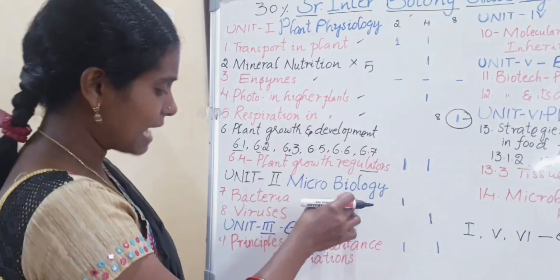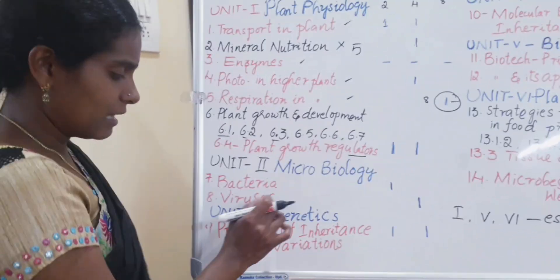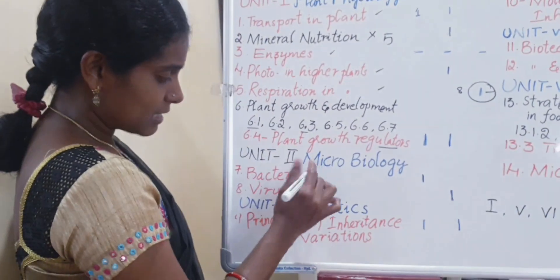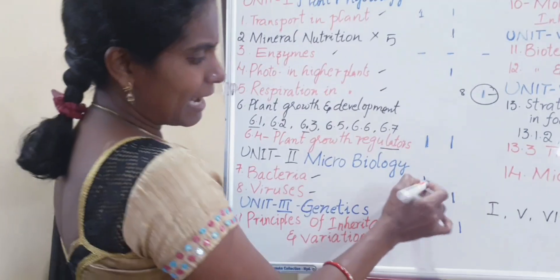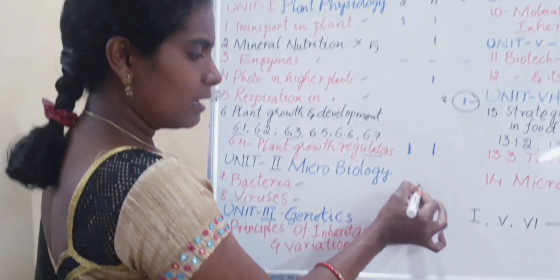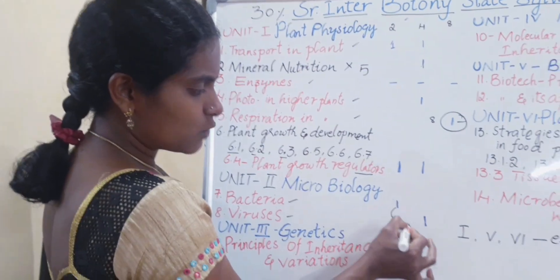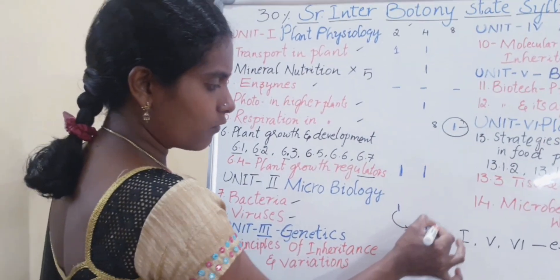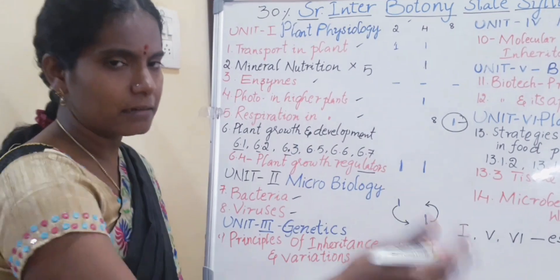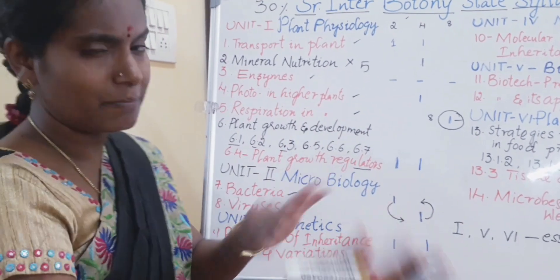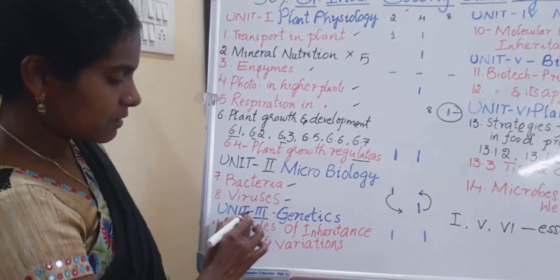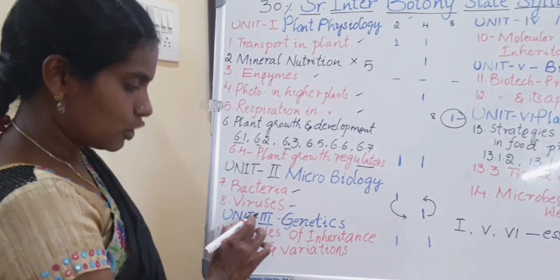Under Microbiology, you are going to read Bacteria and Viruses together. Sometimes the questions may be jumbled — either two marks from Virus or one four-mark question, or one from Bacteria. The questions simply vary between these topics.